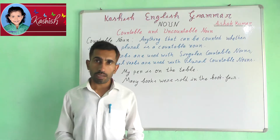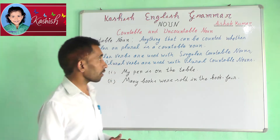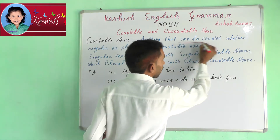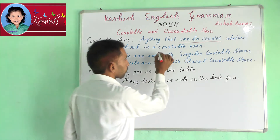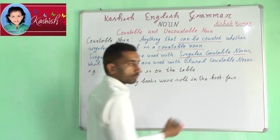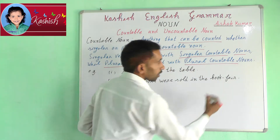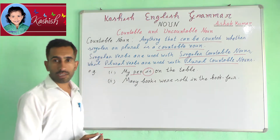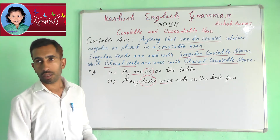Another classification of nouns is whether they are countable or uncountable. Countable Noun: anything that can be counted, whether singular or plural, is called a countable noun. Singular words are used with singular countable nouns, while plural words are used with plural countable nouns. For example, my pen is on the table. Many books were sold at the book fair.